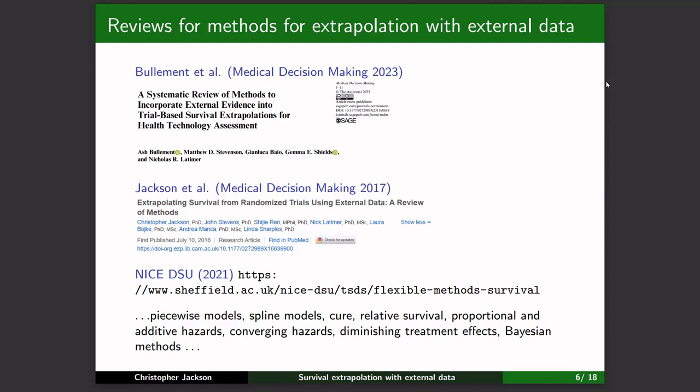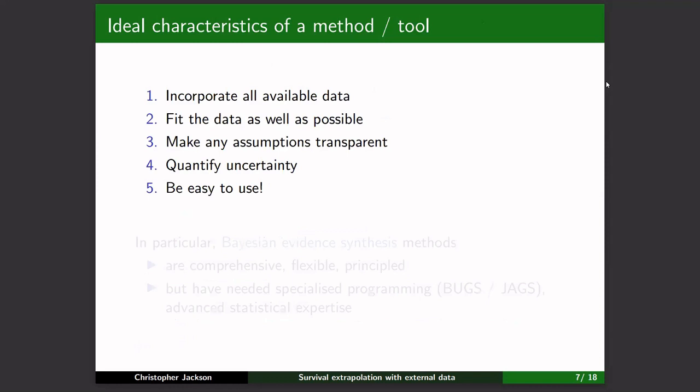I've been interested in this for a while, and what I thought was missing most was a simple tool in which people could put in their data and their beliefs and judgments, and get out the answers they want. It should incorporate all available data, fit that data as well as possible, clearly state any modeling assumptions, quantify uncertainty in results, and — perhaps most importantly — be easy to use, or else nobody's going to use it.